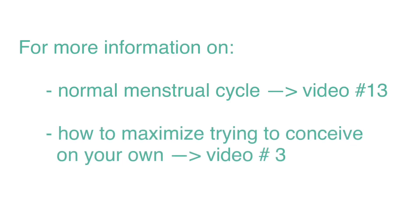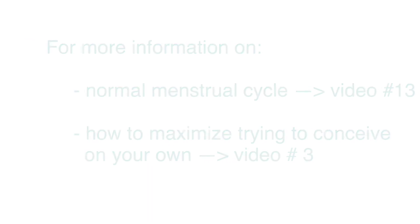Please review video number three, how to maximize trying to conceive on your own, and video number 13, the menstrual cycle, for more information on this. In this video, we'll focus on what methods of testing for ovulation exist. There are overall six methods.